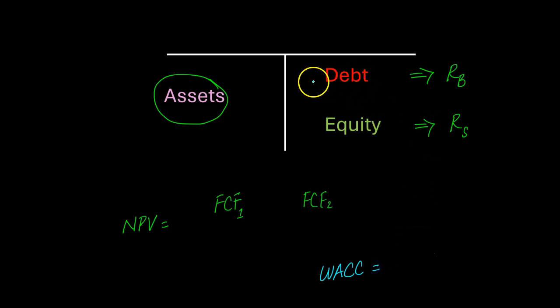WACC is just, well, taking a weighted average. If B represents the value of debt on your balance sheet, and S represents the value of equity on your balance sheet. WACC says, well, take B over B plus S into the cost of debt. Actually, this gets multiplied by one minus the tax rate and plus S over B plus S into the cost of equity.